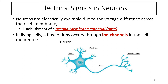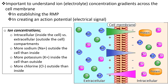In living cells, a flow of ions occurs through ion channels in the cell membrane. The entire length of the neuron is covered in a cell membrane — a phospholipid bilayer, like any other cell type in the body. Embedded in that cell membrane are different channels that allow movement of ions — sodium, potassium, and chloride — from one side of the cell membrane to the other. We'll look at the different types of ion channels and their significance in establishing the resting membrane potential.